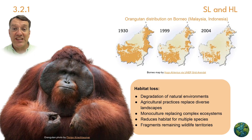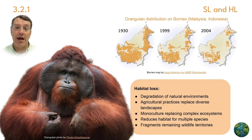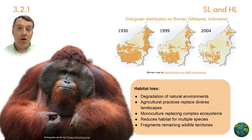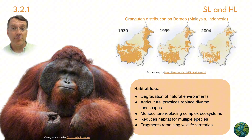Habitat loss represents one of the most significant indirect threats to biodiversity. When natural environments are degraded or destroyed, countless species lose their homes. This map shows the dramatic reduction in orangutan habitat on Borneo between 1930 and 2004. Agricultural expansion, particularly palm oil plantations, has fragmented the remaining forest. When habitats are fragmented, populations become isolated from one another, genetic diversity decreases, and species become more vulnerable to other threats like disease and climate change.